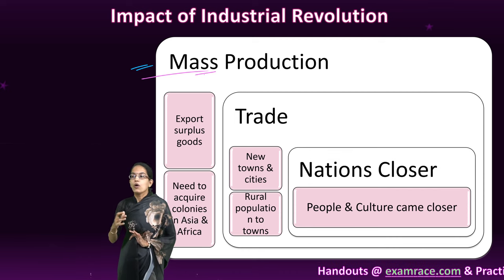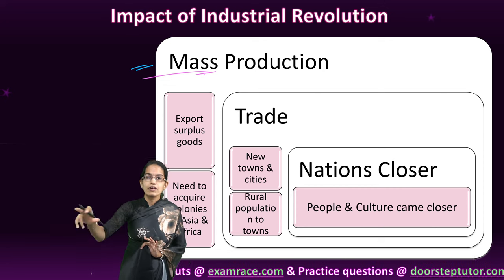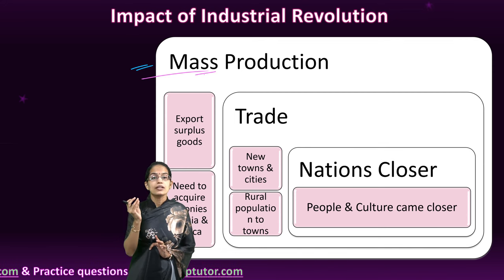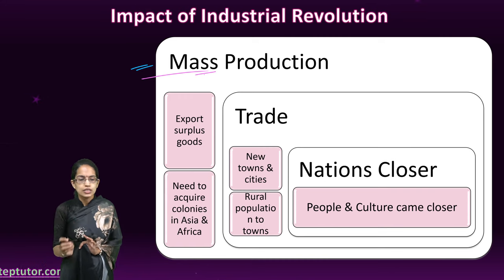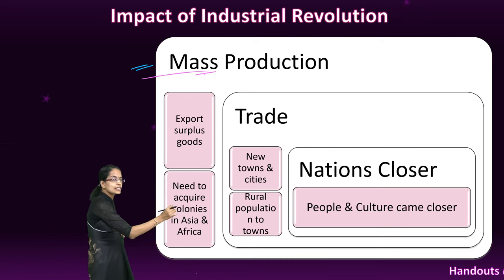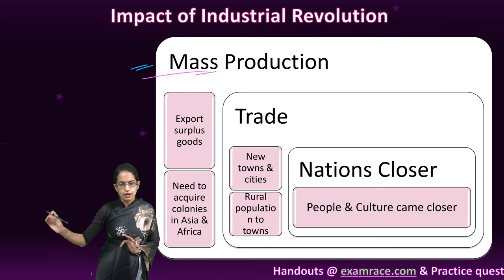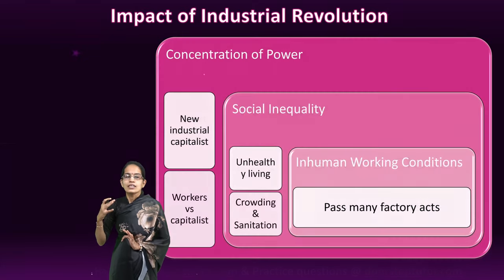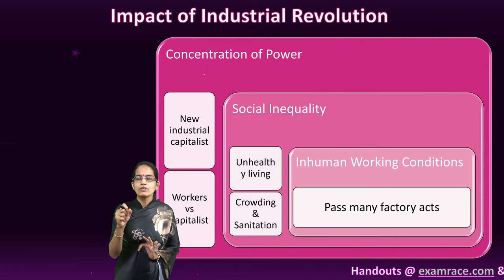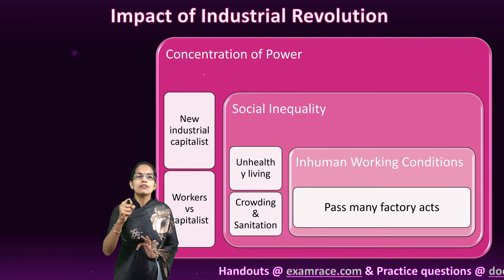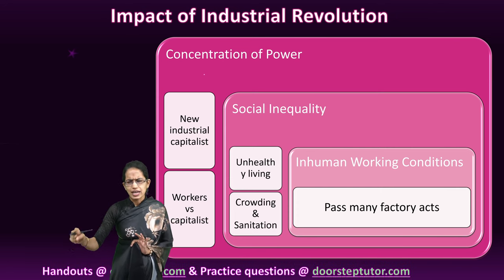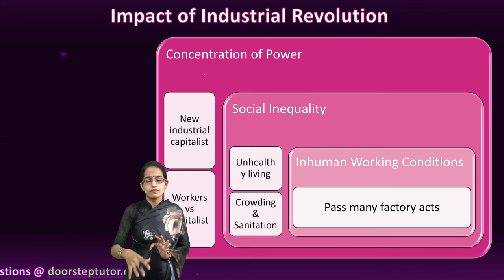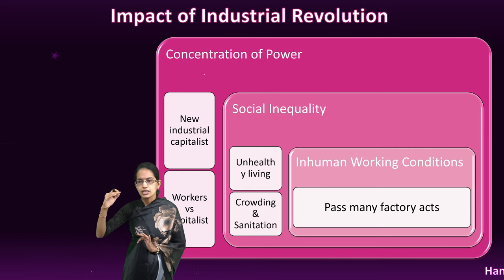As trade developed — with the railway line, the digging of canals, and shipping development — new towns and cities came up. The population residing in rural areas started to move towards towns. Nations came closer to one another, and there was concentration of power. The concentration of power was in the hands of the few — the capitalists. Workers were treated with unhealthy living conditions and unhealthy living areas, and social inequality started to increase in society.